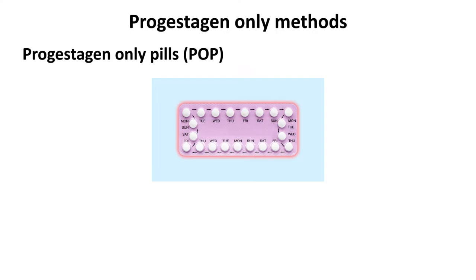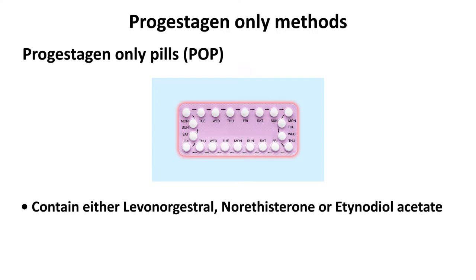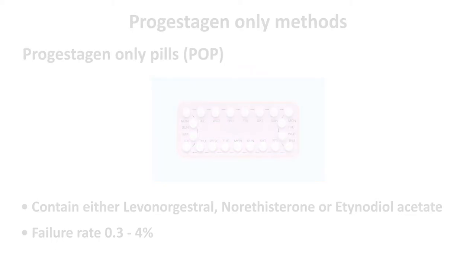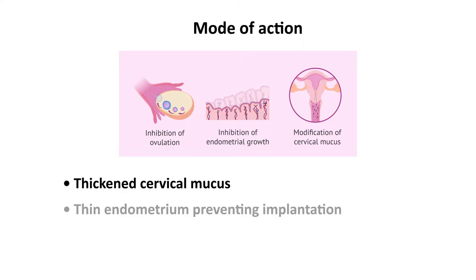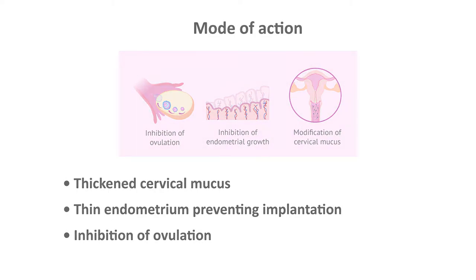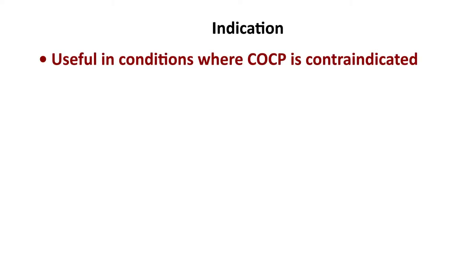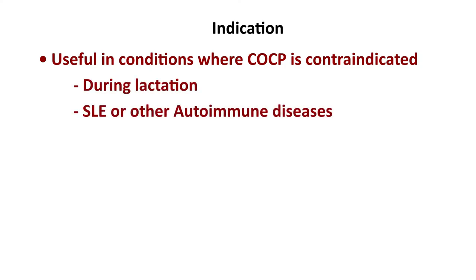Progesterone-only methods. First, progesterone-only pills contain either levonorgestrel, norethisterone, or ethynodiol diacetate, with a failure rate of 0.3 to 4%. Mode of action includes thickening of cervical mucus, thinning of the endometrium, preventing implantation, and inhibition of ovulation. Progesterone-only pills are useful in conditions where COCP is contraindicated, such as during lactation, systemic lupus erythematosus or other autoimmune diseases, and sickle cell disease.